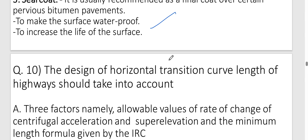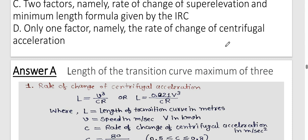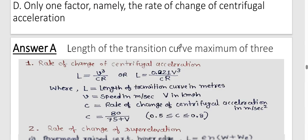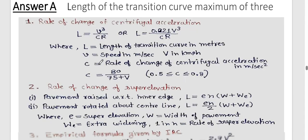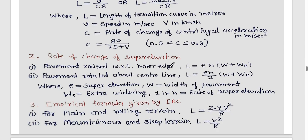Question ten: For design of horizontal transition curve length, which factors should be taken into account? The length of transition curve should be the maximum of three IRC criteria: rate of change of centrifugal acceleration (using the standard formula), rate of change of super elevation, and empirical formula by IRC. The maximum of these three values governs the design.